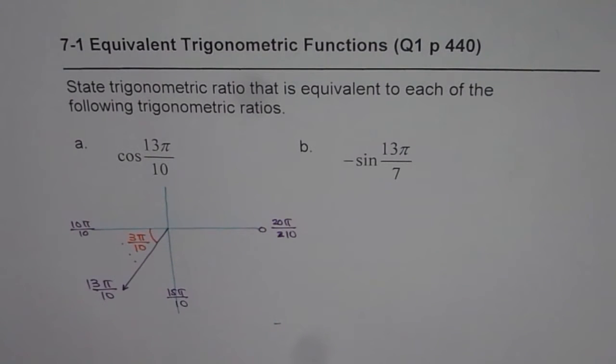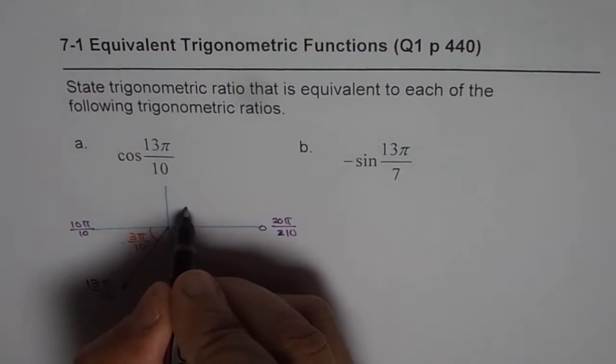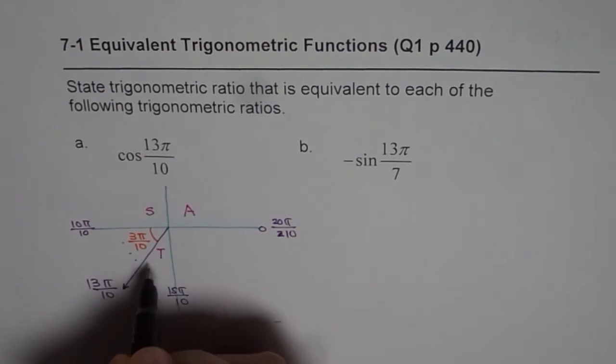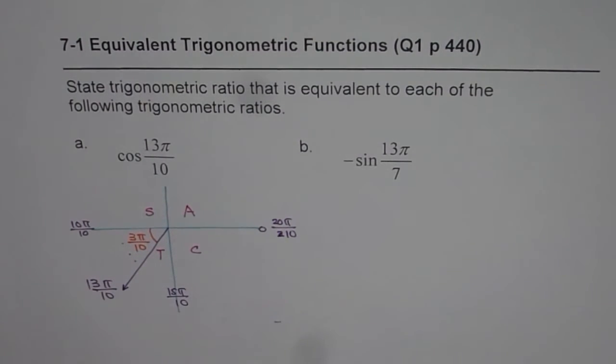Now, cos function is negative in the given quadrant. To find that, you can use your rules, right? So we have all are positive here. Sine is positive in this quadrant, tan in this and cos is quadrant again.